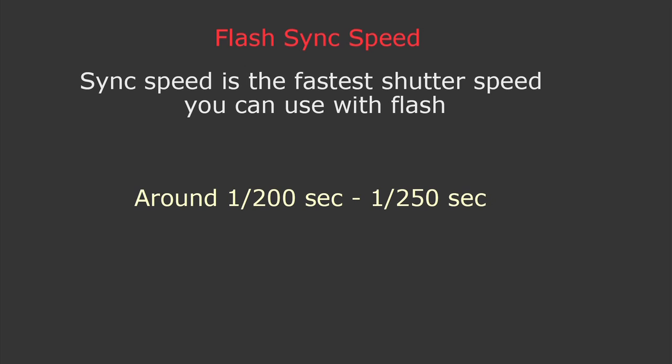Besides the fact that shutter speed doesn't influence flash exposure, you need to know about flash sync speed. Flash sync speed is the fastest shutter speed you can use when shooting with flash. Different cameras may have different sync speeds, but usually it's around 1/200 or 1/250 of a second. You should check your camera manual to find out your specific sync speed.